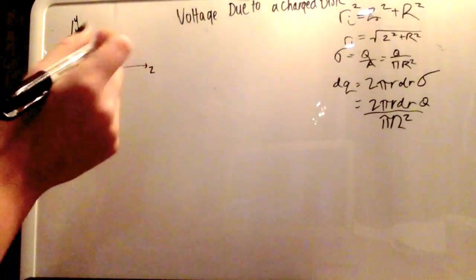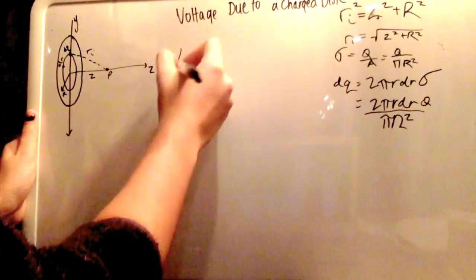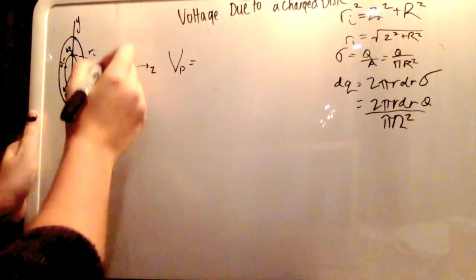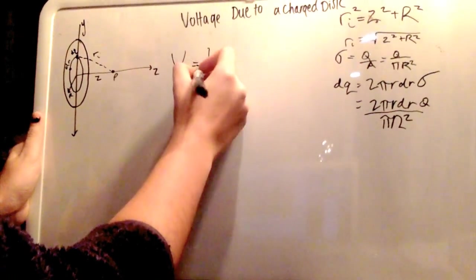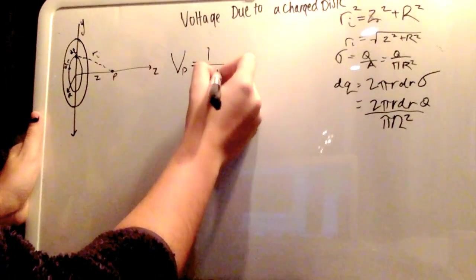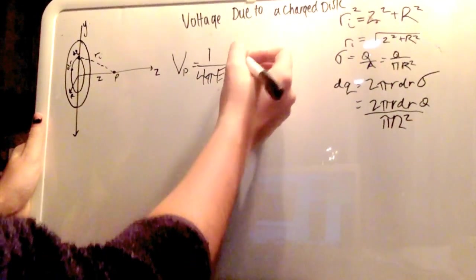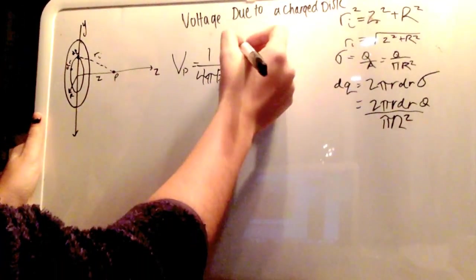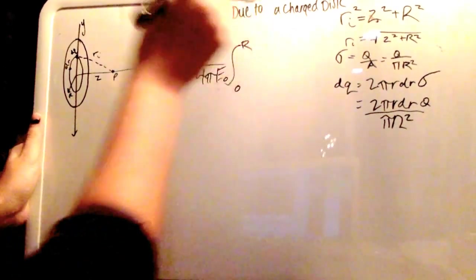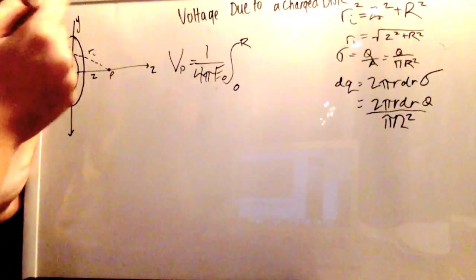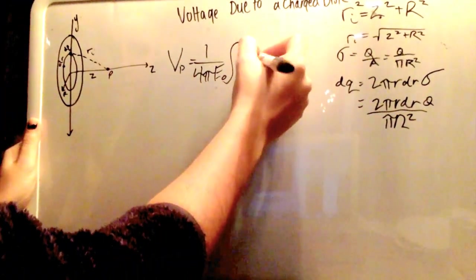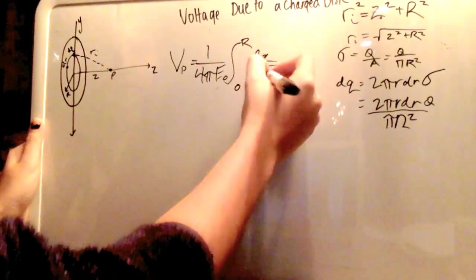Okay now setting up the big equation, V voltage at point P right there is equal to 1 over 4 pi epsilon nought, which is the constant k, integral from 0 to r, dq over ri.